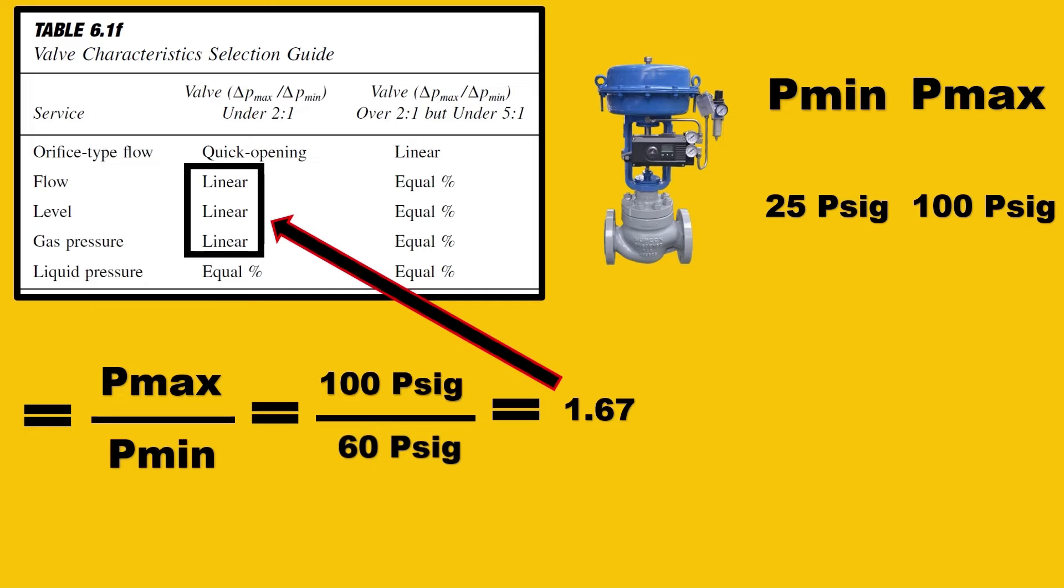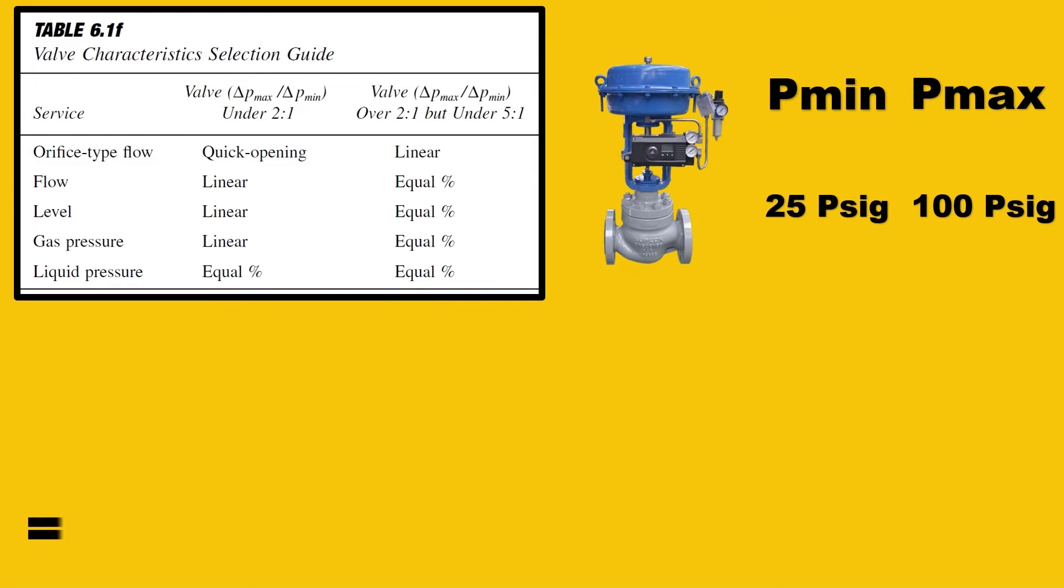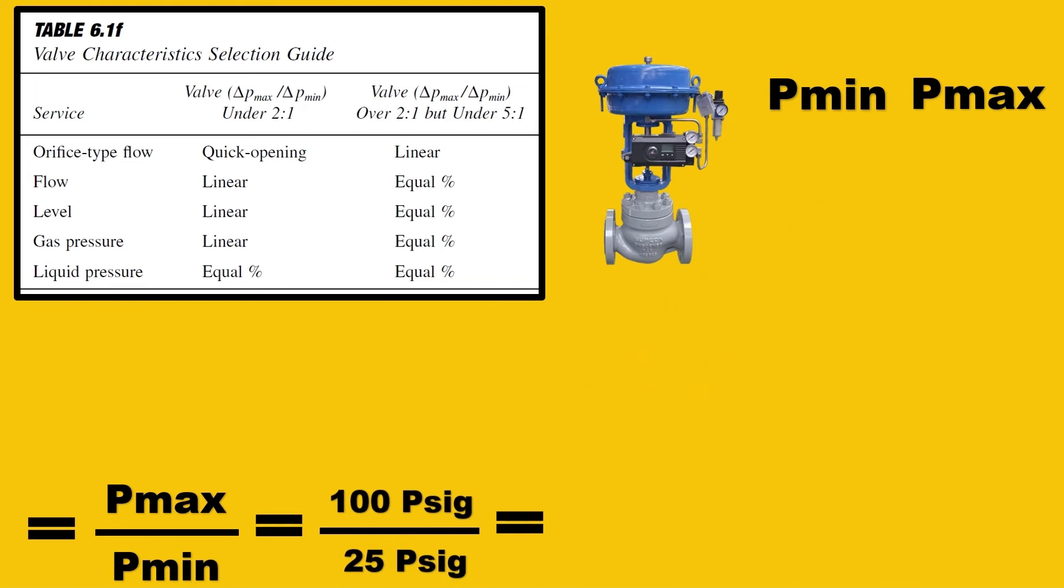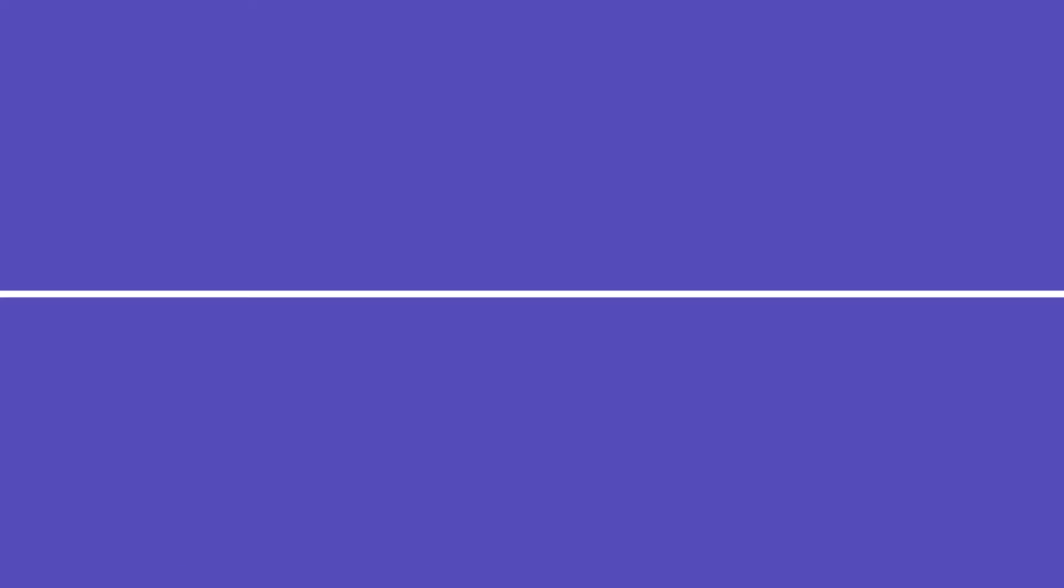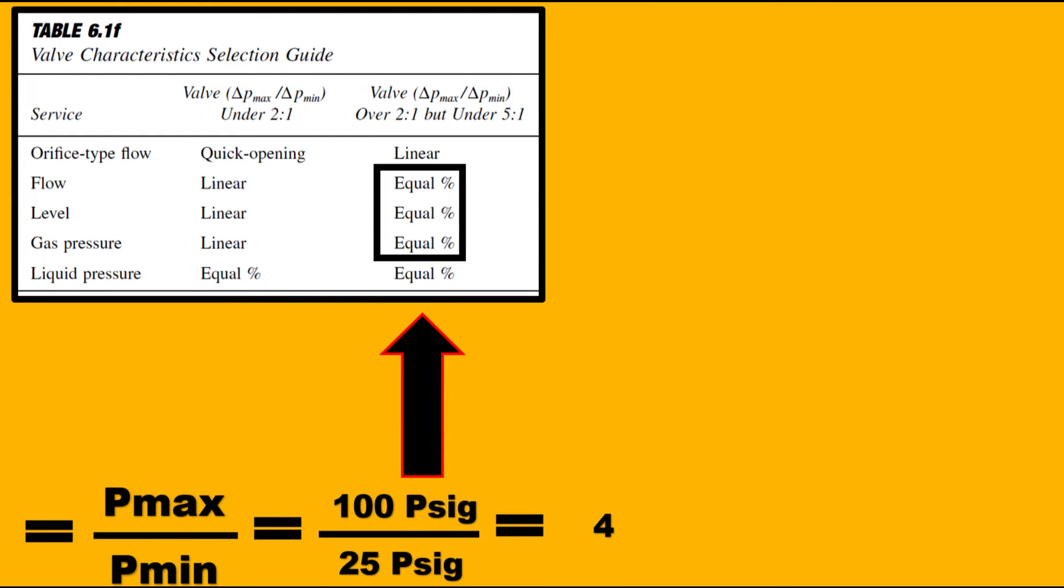If the pressure variation is more, for example 100 to 25 psig, when you calculate 100/25, you get 4, which is greater than 2. So you go for the second column, which recommends an equal percentage valve.